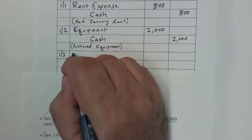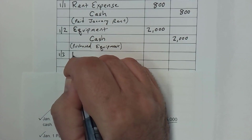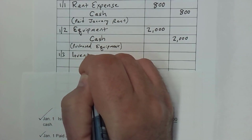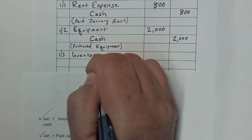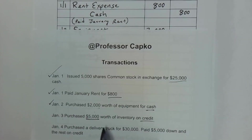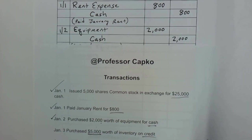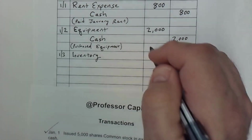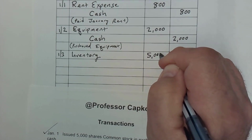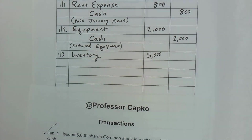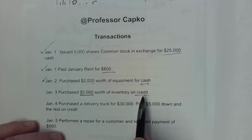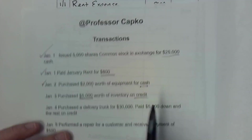Inventory is an asset and it increased. So I'm going to debit inventory. I'm going to debit it for the full price that we paid — the $5,000. And then since we paid on credit,